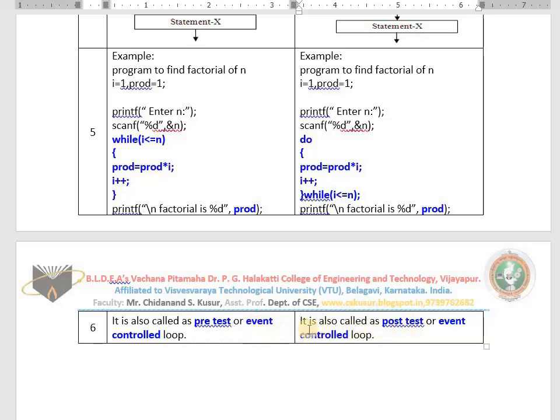Next class I'll teach you for loop. For is counter controlled. Not event. While and do-while are event controlled, but for is counter controlled. The counter means i++ is a counter. i equals to 1 or 0, i less than equals to n, i++. That is called as counter controlled. I will explain you in the next class.